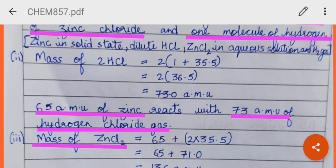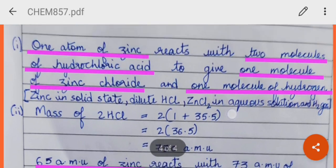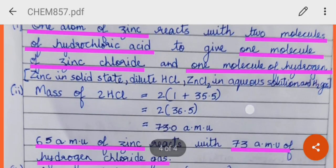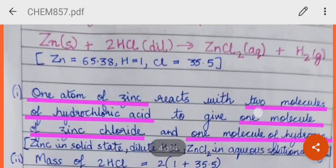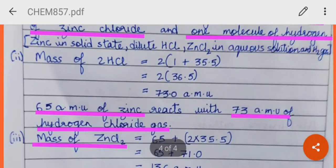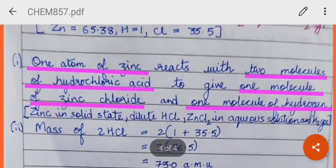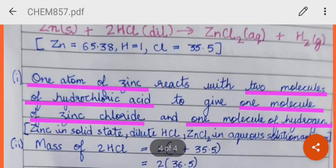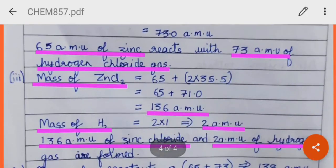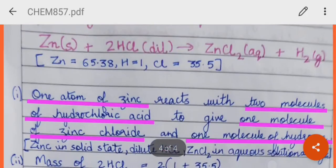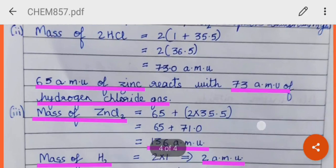So, what we can say is that 65 atomic mass unit of zinc reacts with 73 atomic mass unit of hydrogen chloride gas. Now, let us see the mass of zinc chloride formed. On doing calculation, what do we get? 136 atomic mass unit. And mass of hydrogen is 2 atomic mass unit.